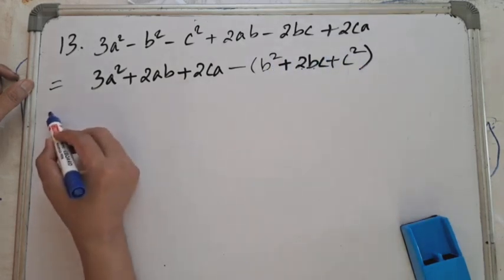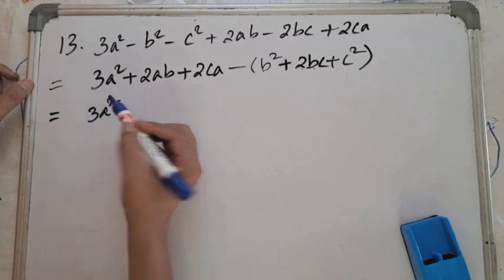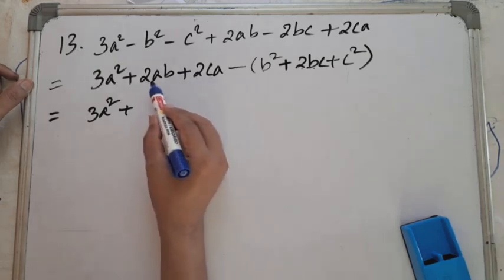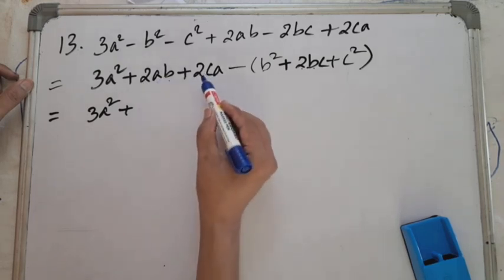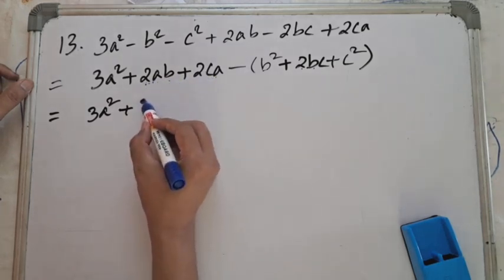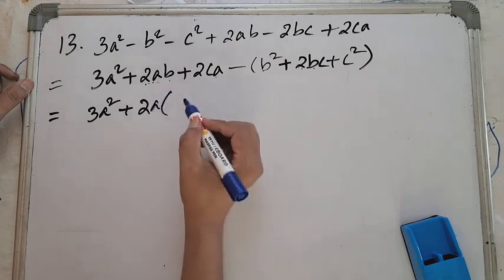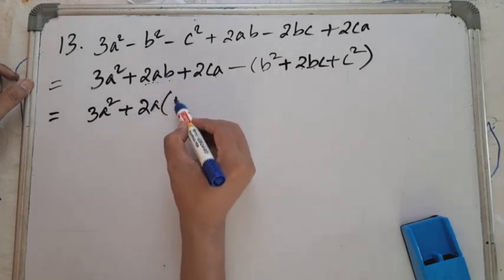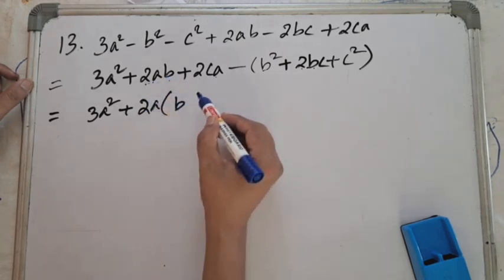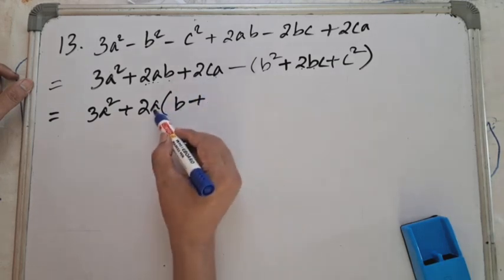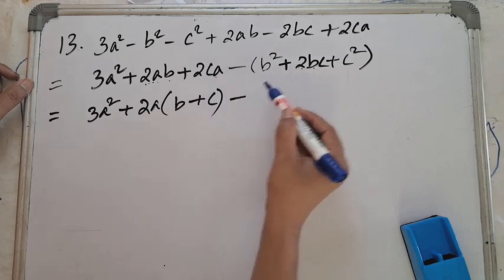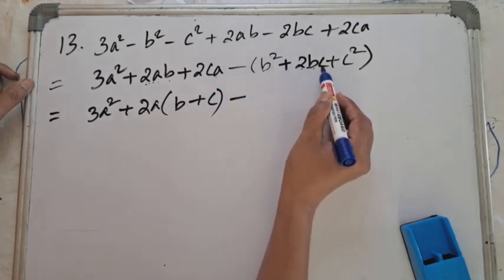Now for 3a² + 2ab + 2ca, we can take 2a as common from the last two terms since both 2ab and 2ca contain 2a. Taking 2a common, b remains in the bracket from 2ab, and c remains from 2ca. So we have 3a² + 2a(b + c) minus (b + c)².